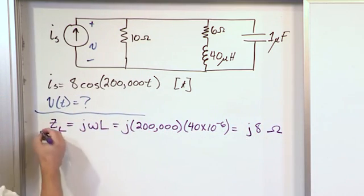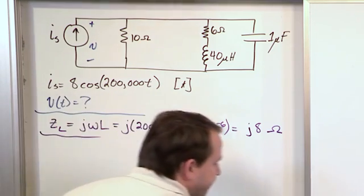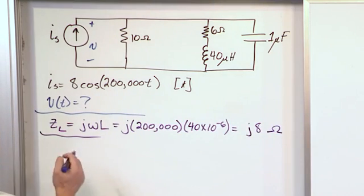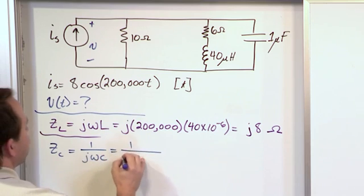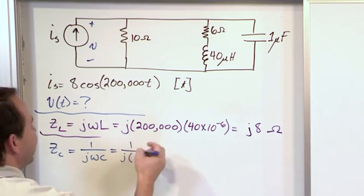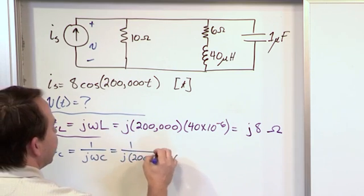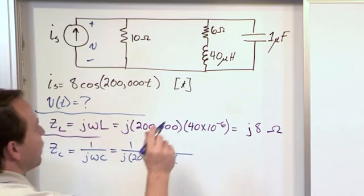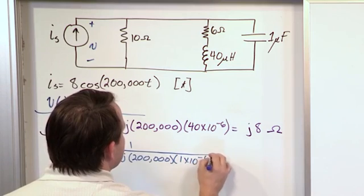The next thing we want to figure out is what would be the impedance of the capacitor. So impedance of the capacitor is 1 over j omega C, which is 1 over j times omega - again is 200,000 - and the value of the capacitance is 1 micro farad, so 1 times 10 to the minus 6.